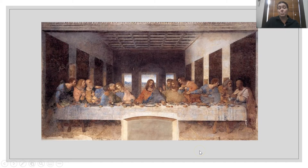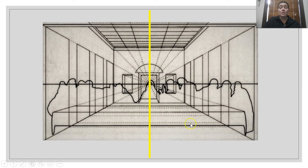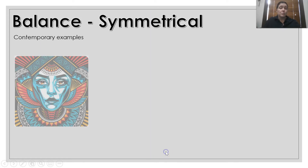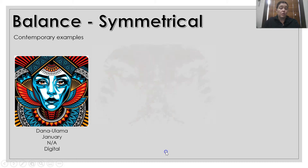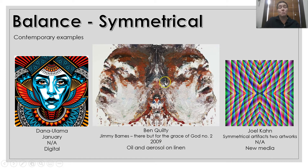If you look at the Last Supper in a little bit more detail — if we look at it as a grid, we can see that it is actually balanced on both sides. Some contemporary examples of symmetrical work: we have the Lama work, we have Khan's work, and we also have Quilty's work — the Rorschach by Quilty with Jimmy Barnes, where the two canvases are put together and then opened up to show the symmetry.